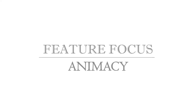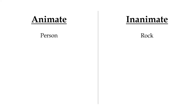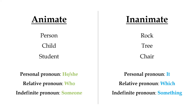Of all the various ways that languages describe and categorize the world, one of the most cross-linguistically prevalent and far-reaching is the concept of animacy. In virtually all languages, there's an unspoken understanding that some nouns are more animate than others, which will influence how any given noun will be treated grammatically, syntactically, or otherwise.